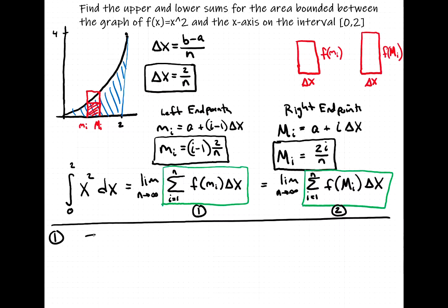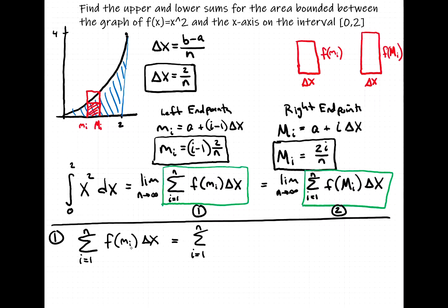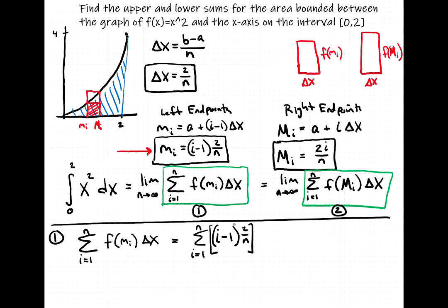For number one, the summation as i goes from 1 to n — adding up the area of n rectangles — where the area of each rectangle is height times base, the height is f of lowercase m sub i times Δx. So we take the lowercase m sub i, which is (i − 1) · (2/n), plug it into our function, and square it — because f(x) = x² — then multiply by Δx = 2/n.